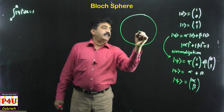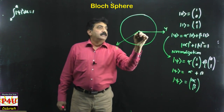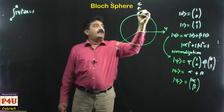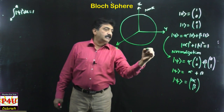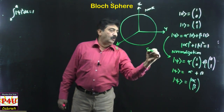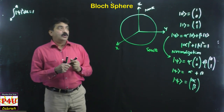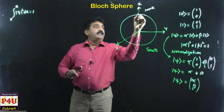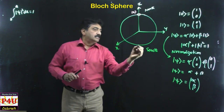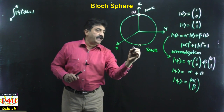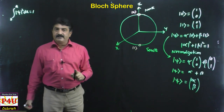The Bloch sphere has three coordinate axes: x, y, and z. I call the top as the north pole and the bottom as the south pole. The north pole represents the ket 0 state, and the south pole represents the ket 1 state. So the 0 and 1 states are represented in the Bloch sphere like this.